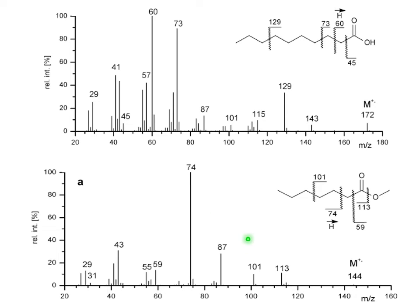So that is how it happens with carboxylic acids. You have several cleavages with usual numbers — like m/z 73 or 129 — but the strongest peak is an even-numbered peak because of the McLafferty rearrangement.